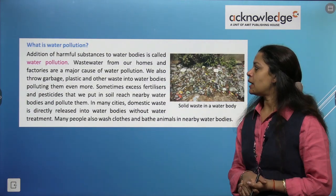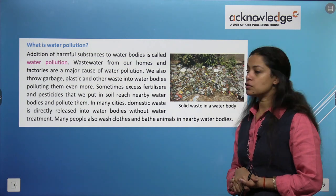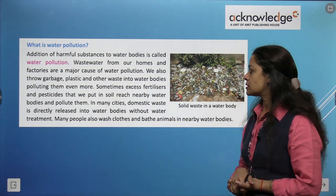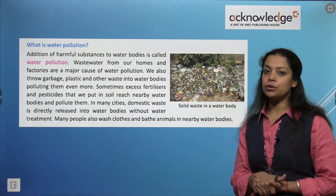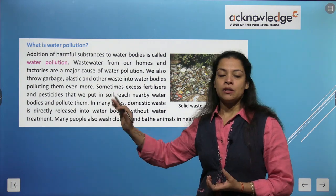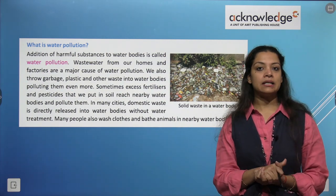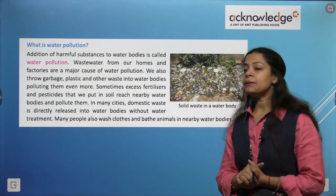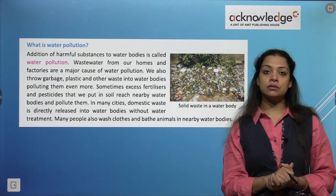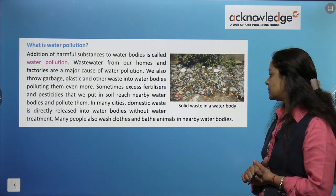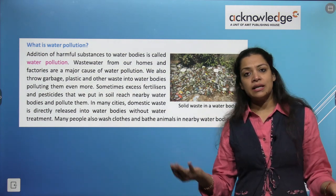What is water pollution? Addition of harmful substances to water bodies is called water pollution. Waste water from our homes and factories is a major cause. We also throw garbage, plastic and other waste into water bodies, polluting them further. Sometimes excess fertilizers and pesticides used in soil reach nearby water bodies and pollute them. In many cities, domestic waste is directly released into water bodies without treatment. People also wash clothes and bathe animals in nearby water bodies, which is also water pollution.